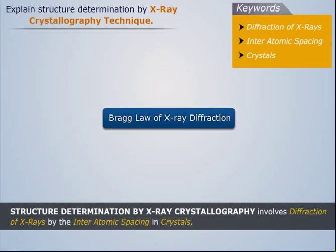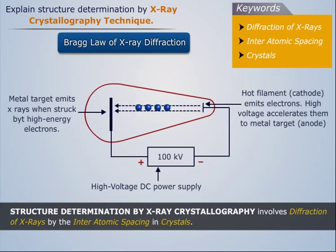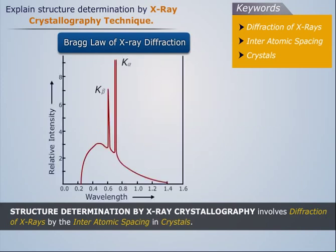Let us now discuss the Bragg law of X-ray diffraction. When electrons moving at high speeds are directed to a metal target, some percentage of their kinetic energy is converted into X-rays of a continuous range of wavelength radiations. The radiation K-alpha has high intensity and is used for diffraction studies.